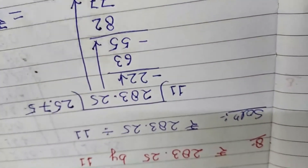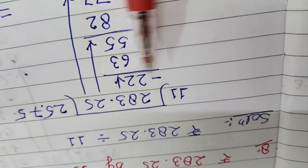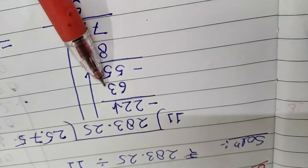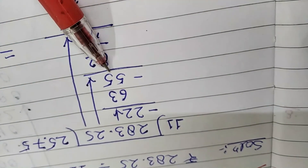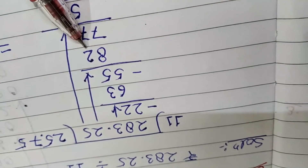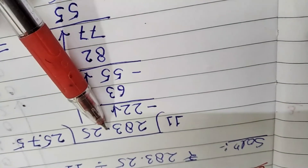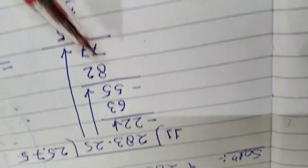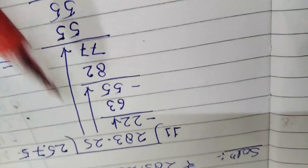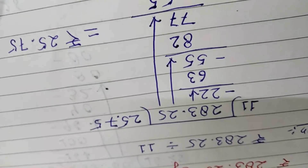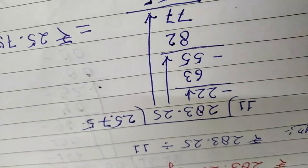Continuing: 11 divided — 11 goes 2 times as 22; minus 6 leaves remainder 3. Then 11 times 5 is 55; minus gives remainder 8, bring down 2. Put the decimal in the answer at the correct position. The final answer comes out to 25.75.